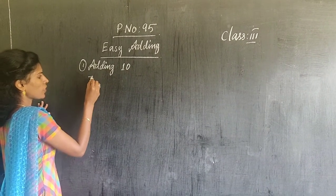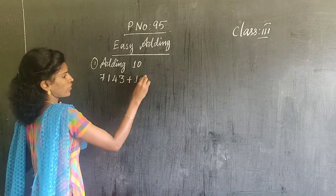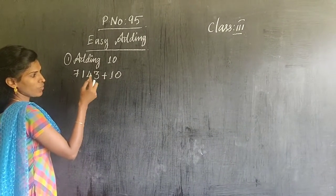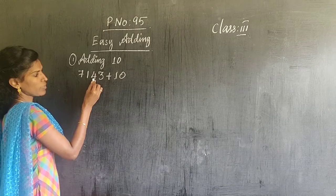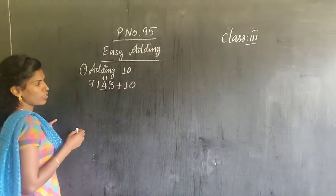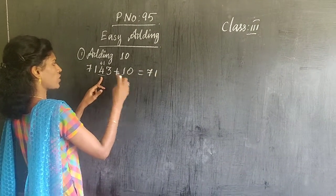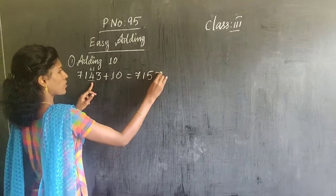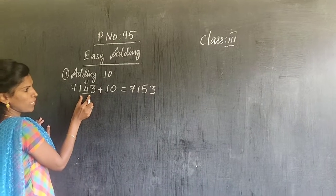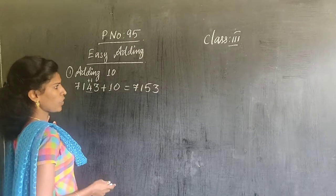Suppose there is a number 7143. With this number you have to add 10. Since you are going to add 10, the tens place will increase by 1. The number in the tens place here is 4, so this will increase by 1 — 4 plus 1 is 5. Only the tens space will change, so the answer is 7153, and the 3 will remain. To add 10, you just add 1 to the digit in the tens place.